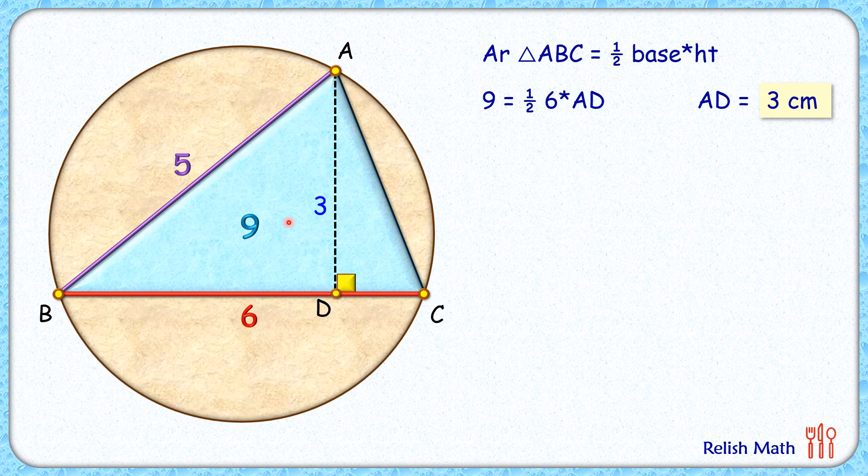...one of the sides is 3, so the second side will be 4 cm. And thus this DC length will be 6 minus 4, or 2 cm. Now let's extend AD to meet the circle at point E.